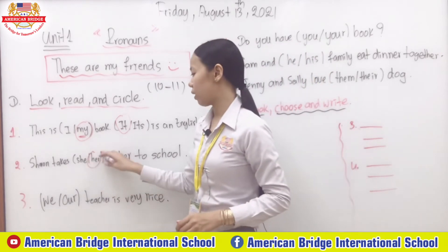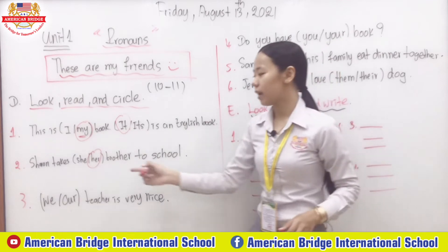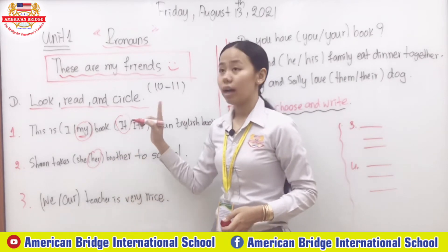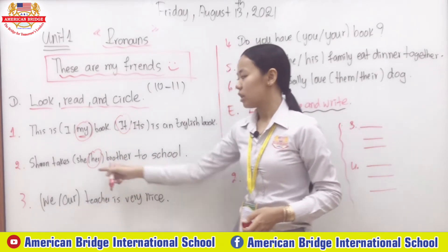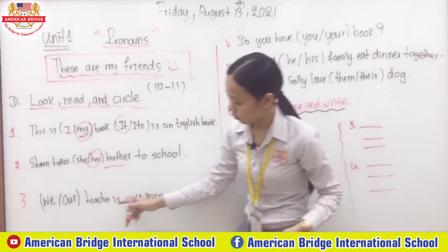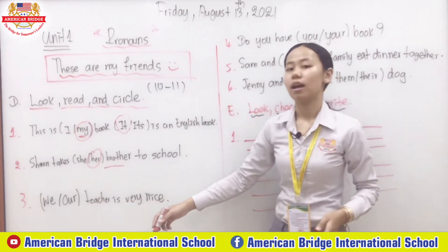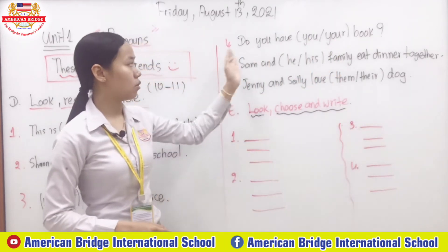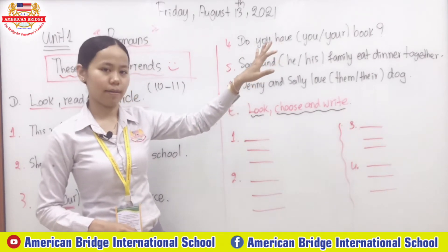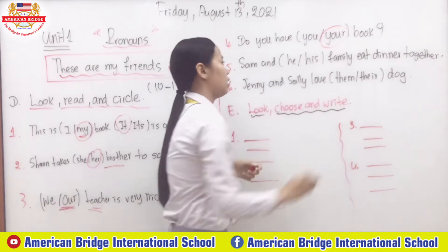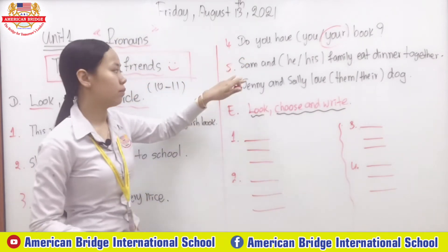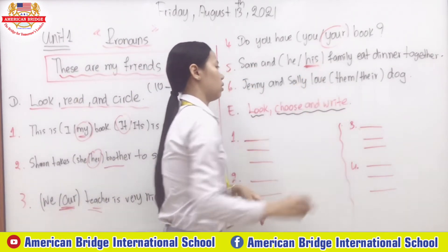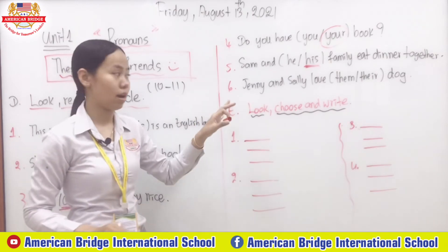Number two: Sharon takes 'her' brother. You cannot say 'she brother.' We use possessive adjective to show possession — 'her brother,' her sibling. Number three: 'our teacher is very nice' — we use 'our,' possessive adjective. Number four: 'do you have your book?' — we use 'your.' Number five: Sam and 'his' family — possessive adjective to show possession.